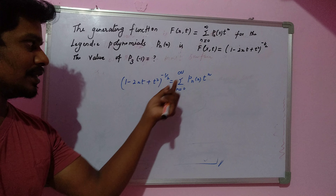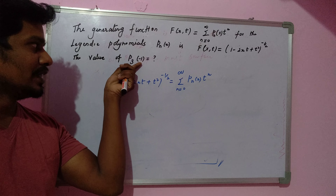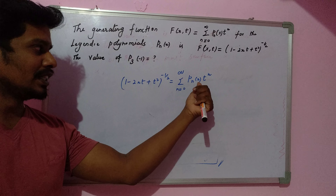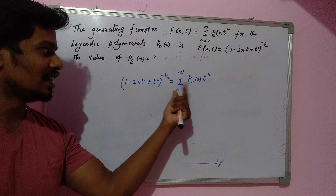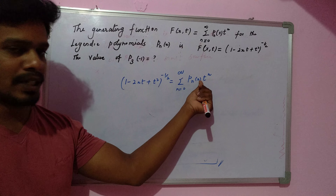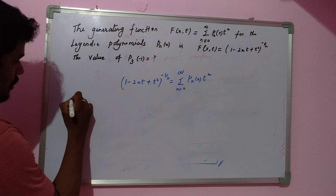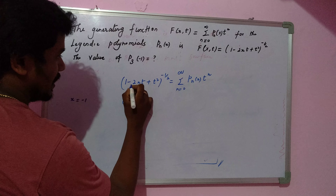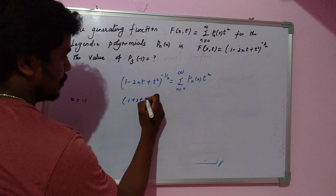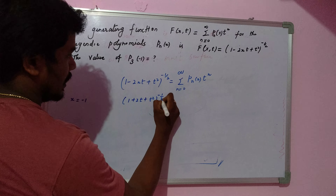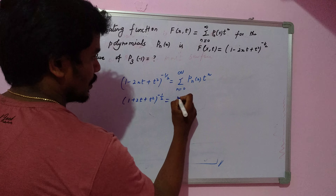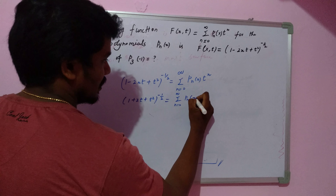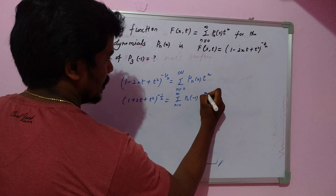The first step is to substitute x = -1, because we need P₃(-1). Substituting x = -1 gives us (1 plus 2t plus t squared) to the power minus one-half, which equals the summation from n=0 to infinity of Pn(-1) times t to the power n.